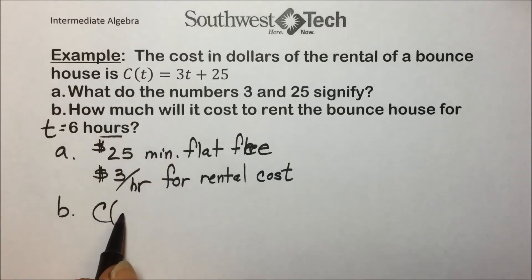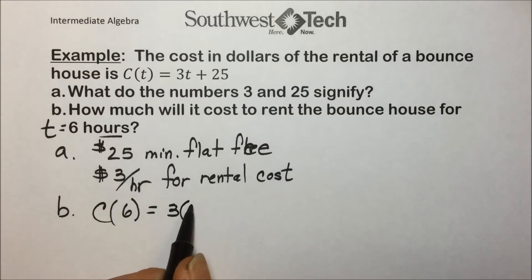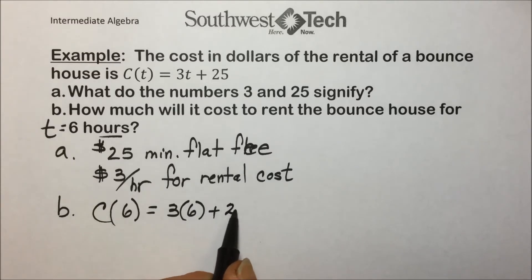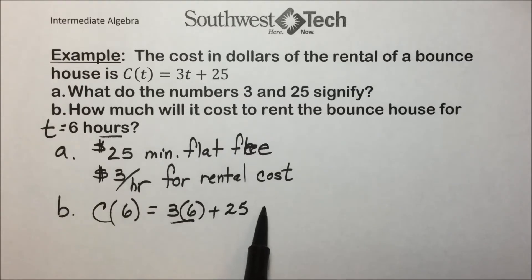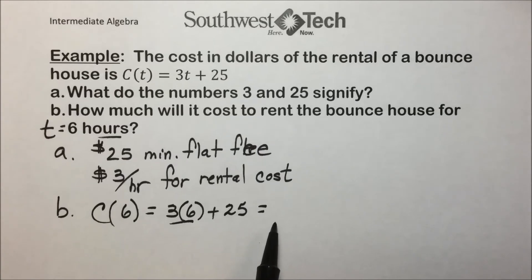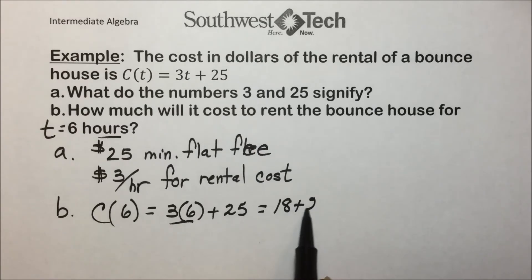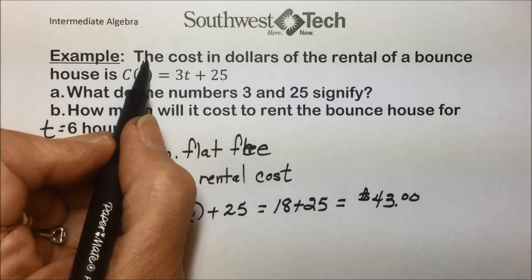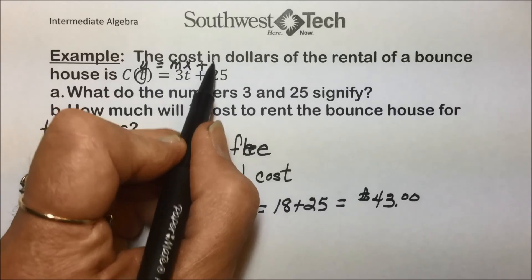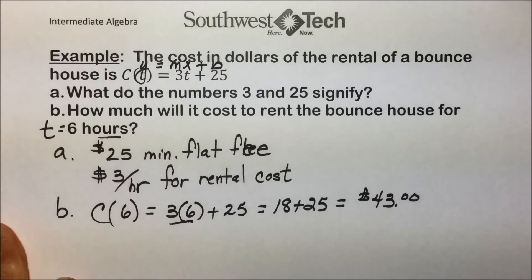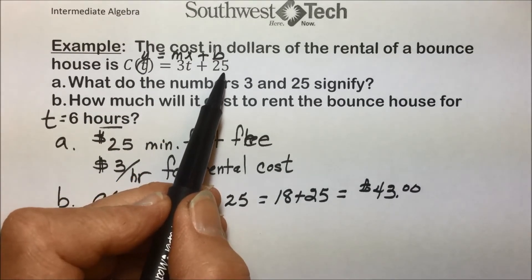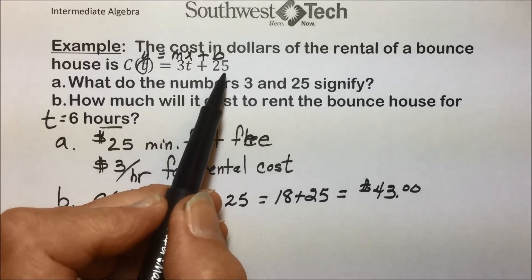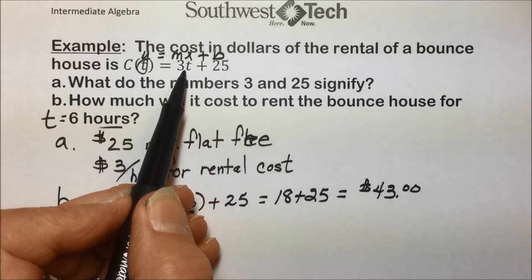The 3 is being multiplied by T, the time the bounce house is used. This is the rate per hour — assuming hours — for the rental cost. It could be minutes, though days seems unlikely since bounce houses are generally pricey to rent. So the interpretation is a flat fee plus a price per hour.